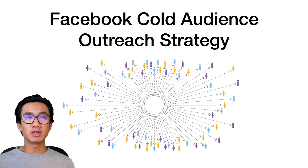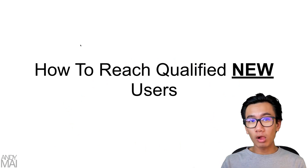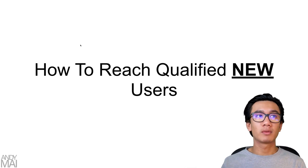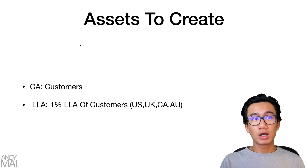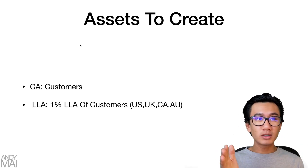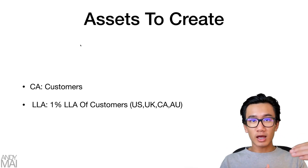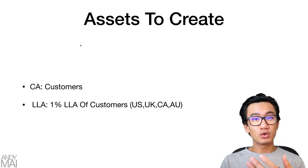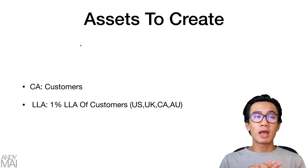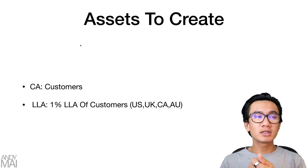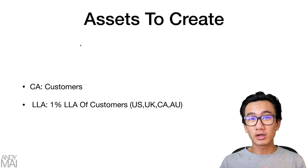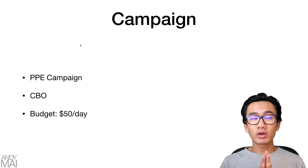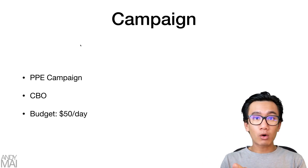Facebook cold audience outreach strategy — how to reach qualified new users. What you want to start with is creating these assets: create a custom audience of your customers, then use that custom audience to create a one percent lookalike audience off those customers targeting the US, UK, Canada, and Australia. Customers can be purchasers, email list subscribers, people who've opted in, or people who've added to cart — just create an audience list that's over a thousand people.